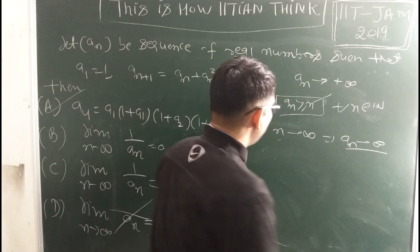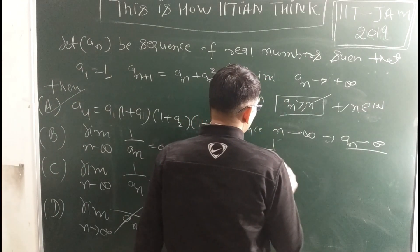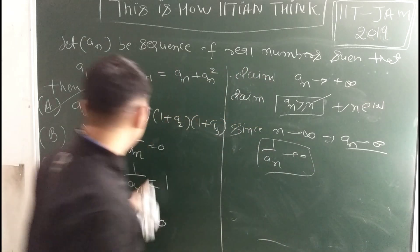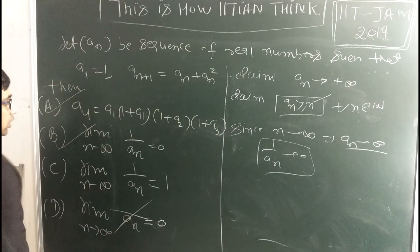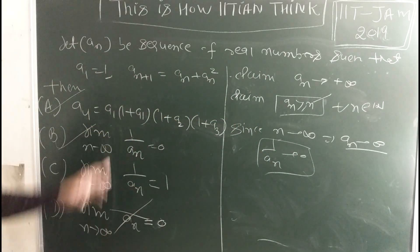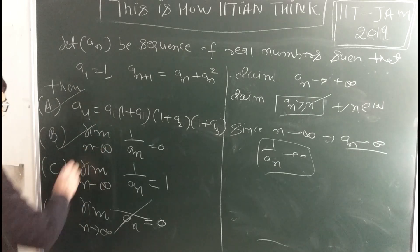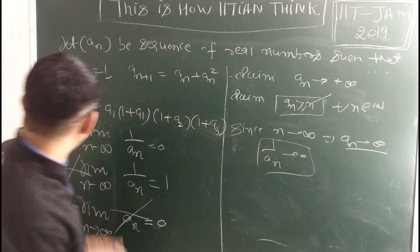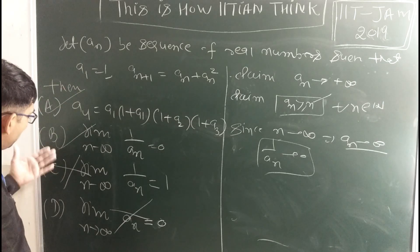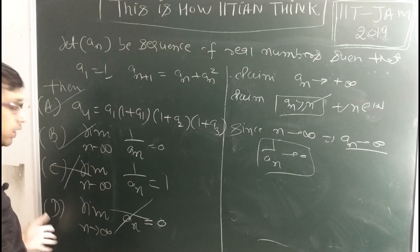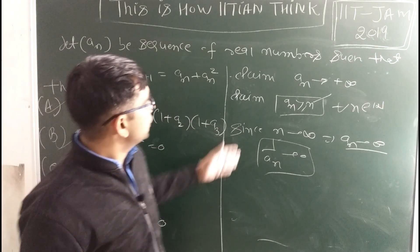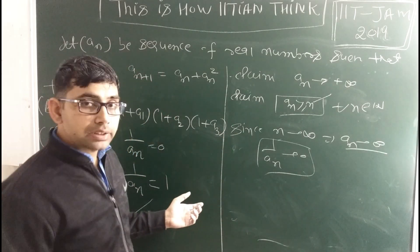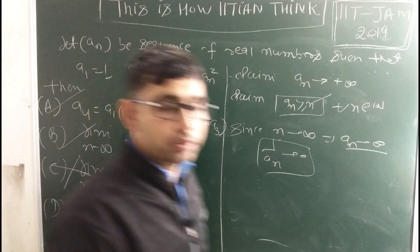It implies aₙ/n goes to 0. Since aₙ ≥ n, option B and option C follow. Thanks very much.